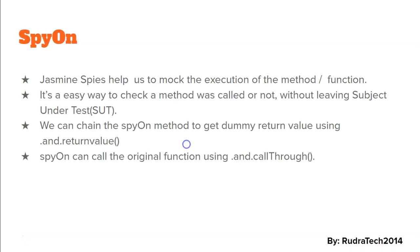SpyOn is a functionality provided by Jasmine and it acts as a spy for our functionality. Jasmine spies help us to mock the execution of a method or a function. It is a very easy way to check whether a method was called or not without leaving the subject under test. That means if we are testing something and we want to check whether a sub-functionality has been executed properly or not, that can be done without leaving the current unit test.